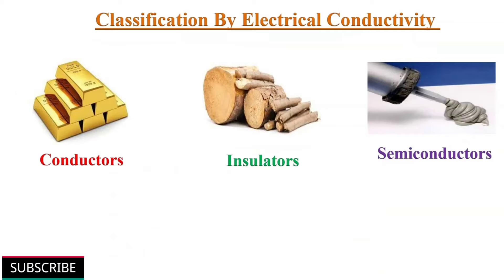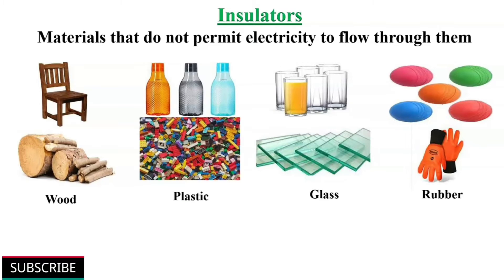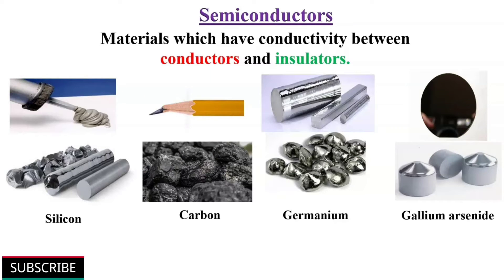All materials can be classified as conductors, insulators, and semiconductors according to their electrical conductivity. Materials like gold and copper which transfer electricity through them are called conductors. Materials like wood and plastic which don't transfer electricity are called insulators. There are some materials like silicon and germanium which are neither good conductors nor insulators — their electrical conductivity is in between, and these are classified as semiconductors.